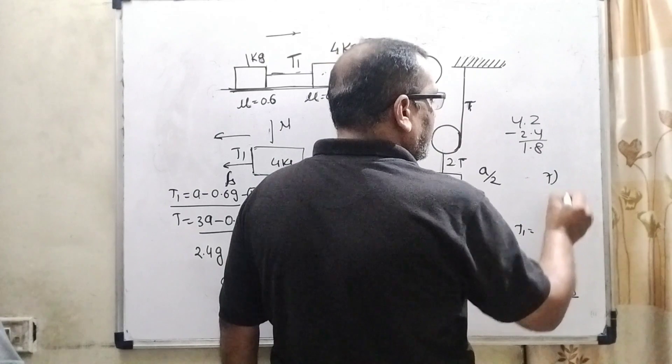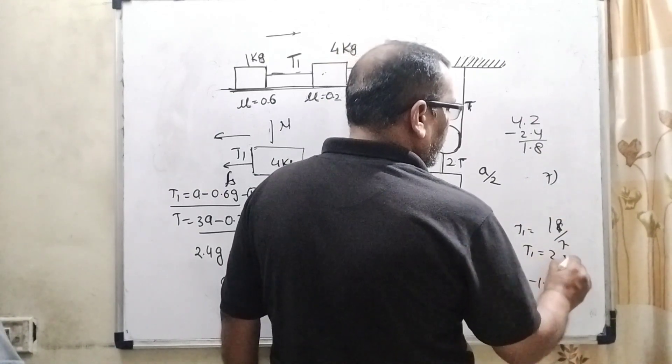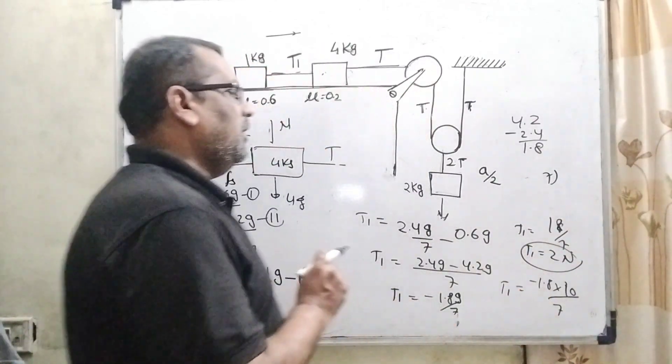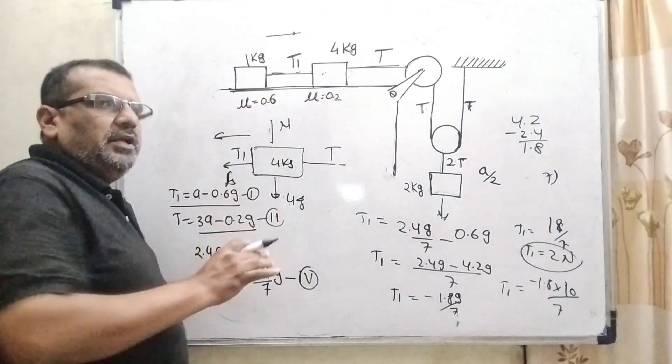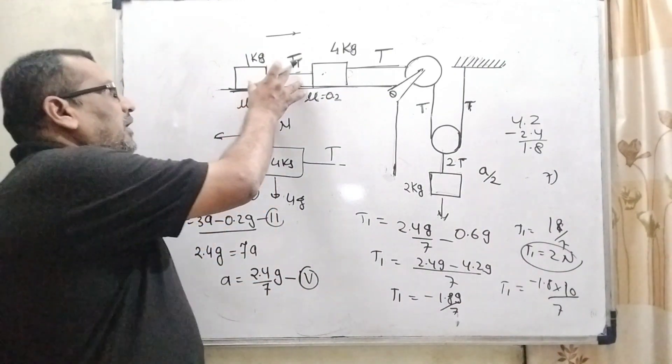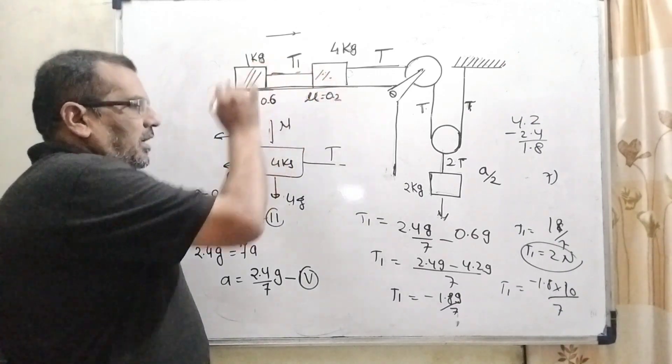So here we have neglected this negative sign. So approximately 7 to the 14. So approximately 2 Newton. Okay. So here T1 is acting 2 Newton in between that first block and second block.